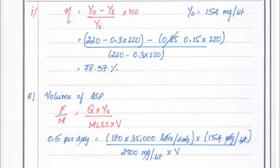Solution: first thing we have to find out the efficiency eta. Eta equals Y0 minus Ye divided by Y0, where Y0 is incoming BOD and Ye equals outgoing BOD. Y0 equals 220 minus 0.3 times 220, so the total value is 154. Ye equals 0.15 times 220 for 85% BOD retention. So 220 minus 0.3 times 220 in the denominator, and the efficiency is 78.57 percentage.